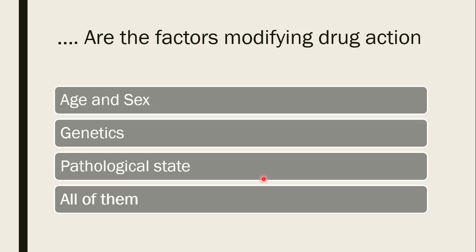Next question: what are the factors modifying drug action? Factors such as age, sex, race, genetics, and pathological state can all modify a drug's action. For example, paracetamol is predominantly an antipyretic, but its action can vary depending on these individual factors. The correct answer is all of them.